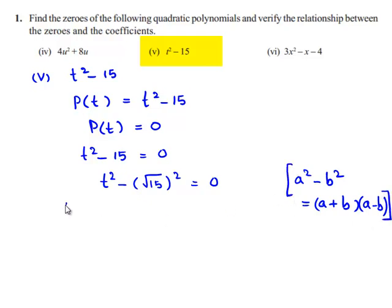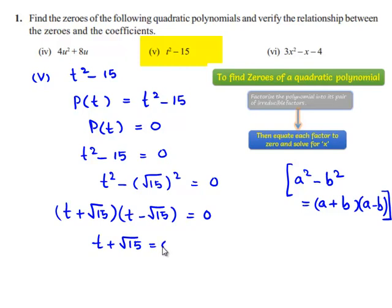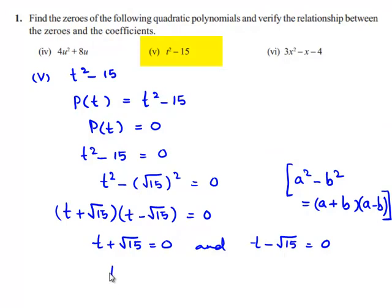So this can be written as (t + √15)(t - √15) = 0. Therefore, t + √15 = 0 and t - √15 = 0. So we can say that t = -√15 and t = +√15.